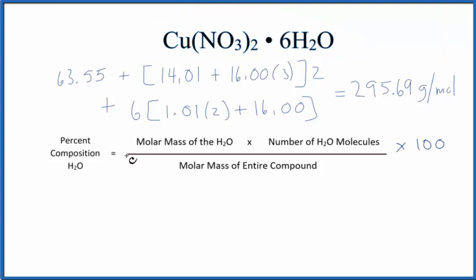Let's use this equation to find the percent composition of the water. First, we take the molar mass of water, that's 18.02 grams per mole. We're going to multiply that by the number of water molecules. We have six separate water molecules here around this copper 2 nitrate, so we'll multiply that by six.